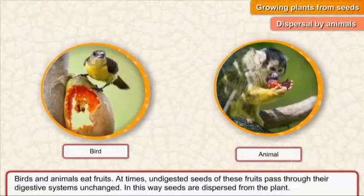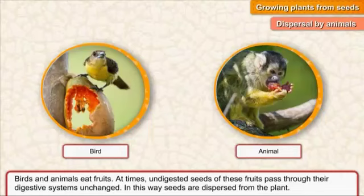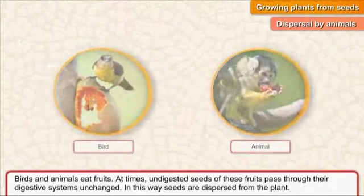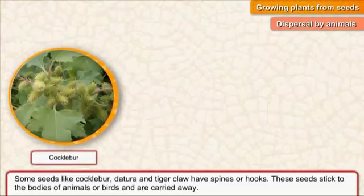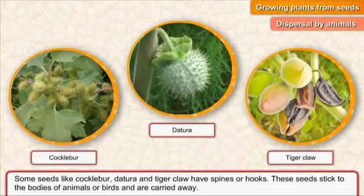Dispersal by animals and birds: birds and animals eat fruit, and at times undigested seeds of these fruits pass through their digestive system unchanged, dispersing seeds away from the plant. Some seeds like cockleburs, dhattura, and tiger claw have spines or hooks. These seeds stick to the bodies of animals or birds and are carried away.